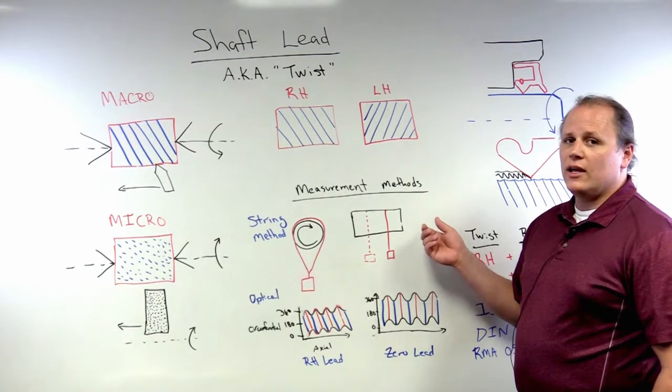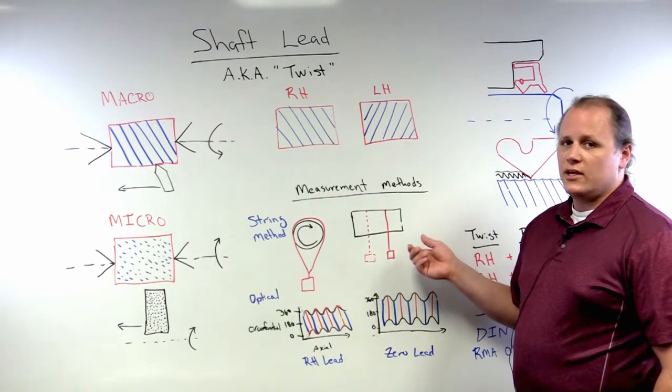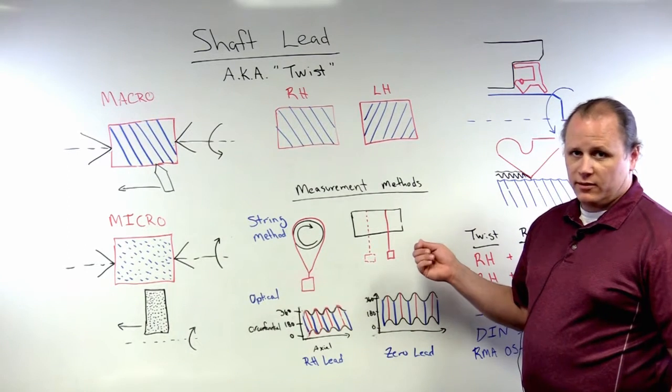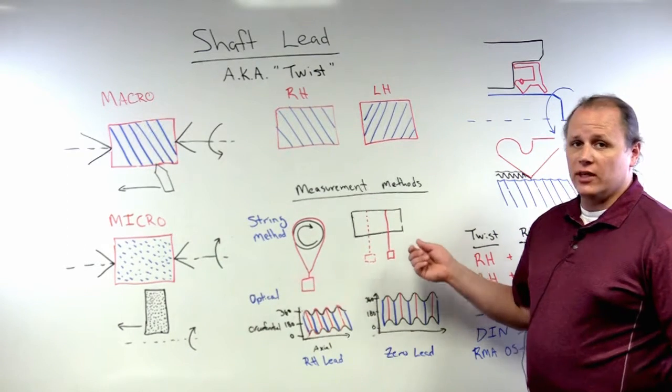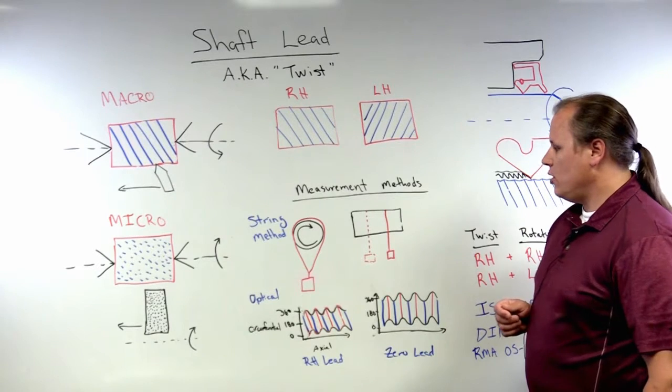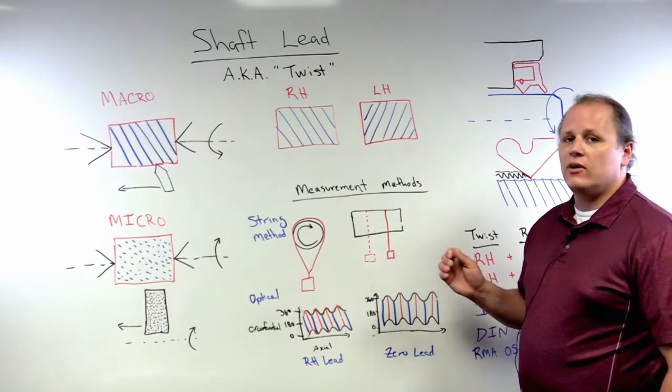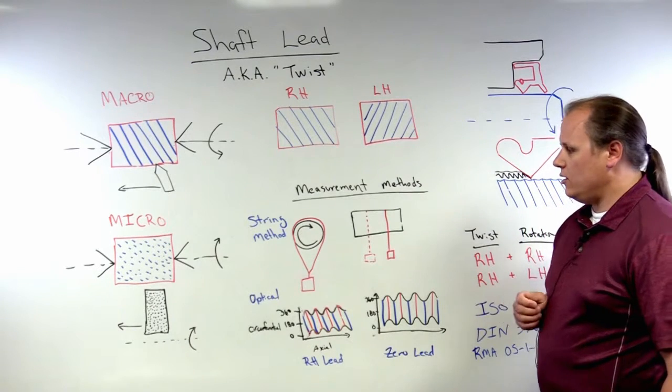You cannot easily and precisely quantify accurately the amount of lead that exists in the shaft, but you can get a qualitative sense of whether or not you have left-hand or right-hand shaft lead.